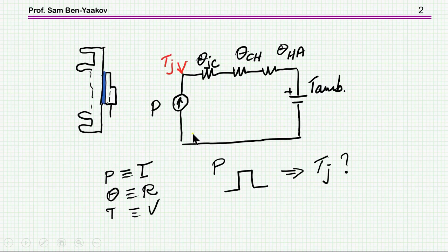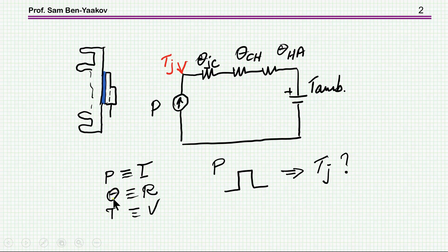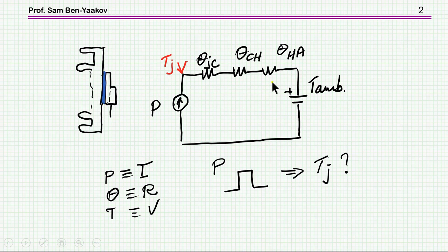We are familiar with the equivalent circuit for the thermal conduction of a device, a MOSFET. In this thermal equivalent circuit, we emulate power by current, thermal resistance by resistance, and temperature by voltage. Here we have a MOSFET connected to a heat sink via an insulator — junction to case thermal resistance, case to heat sink, maybe an insulator or paste, and then between the heat sink and air, clamped to the ambient temperature.